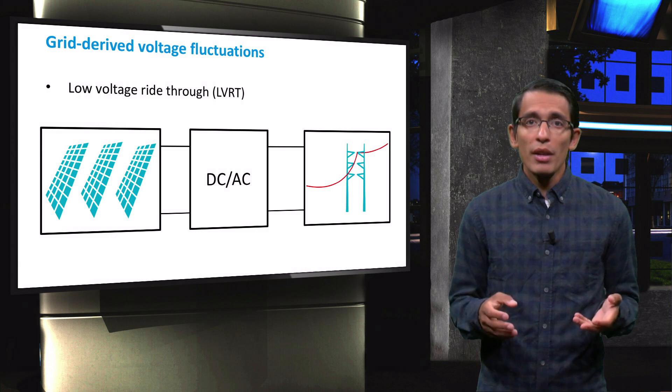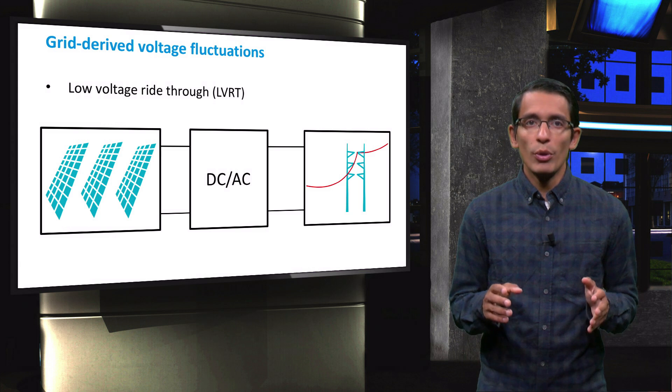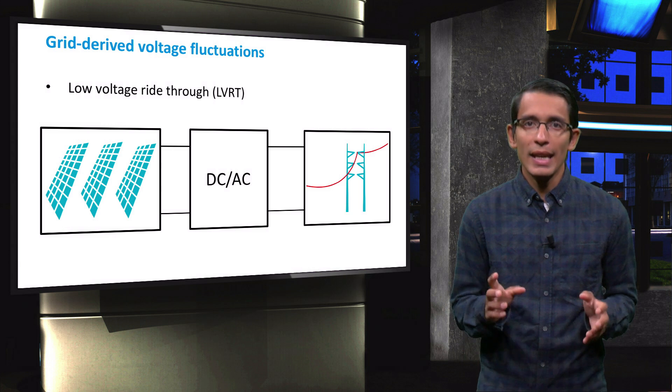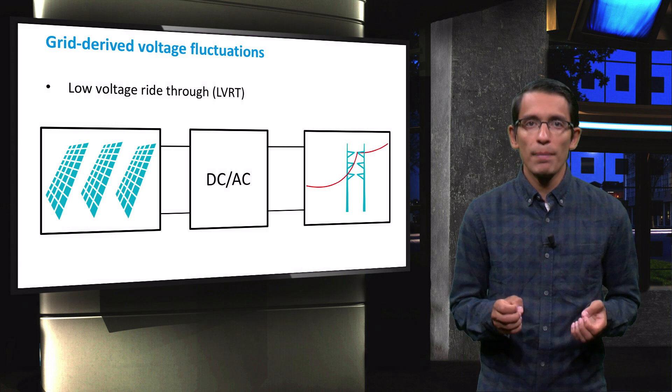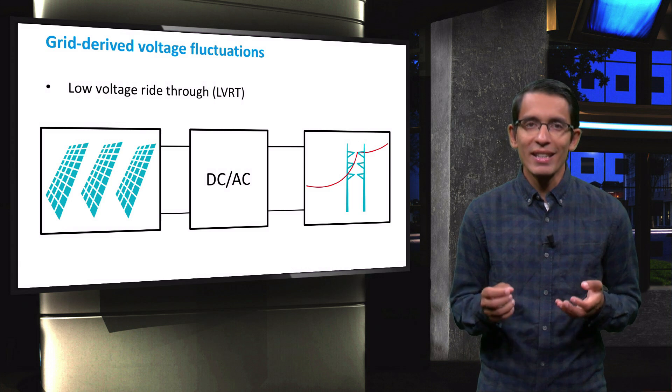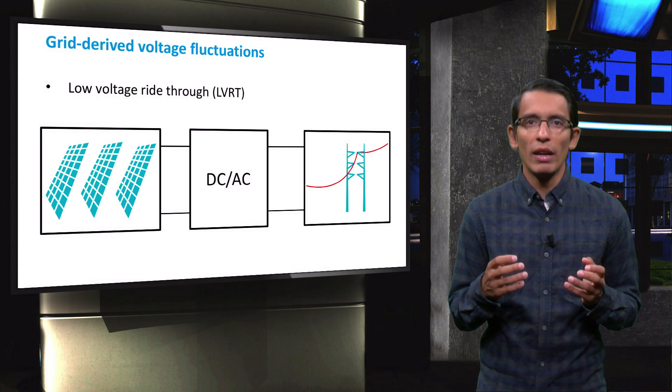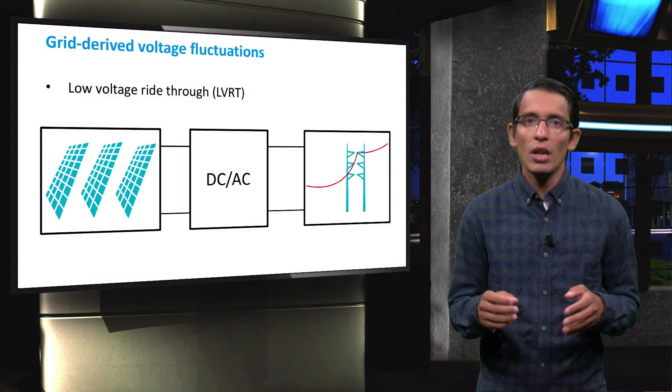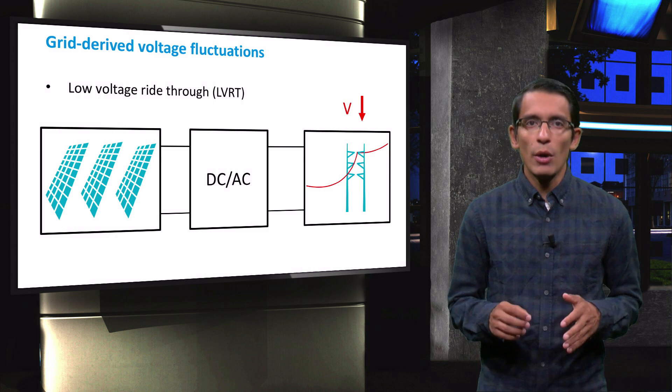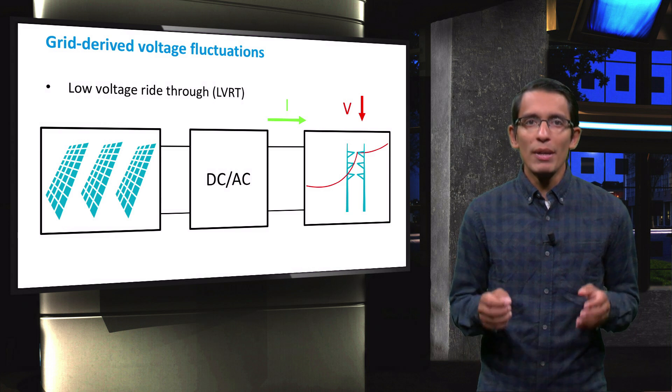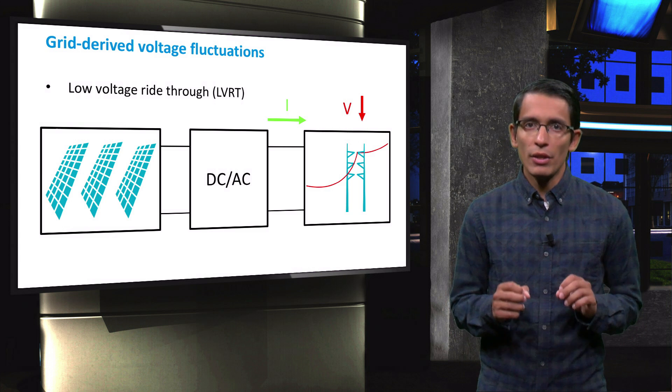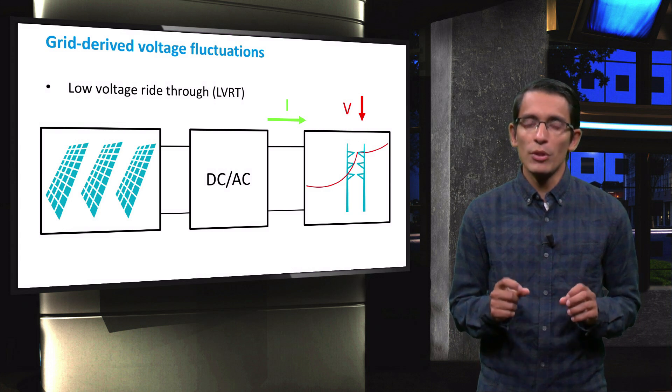One way to broaden voltage dip tolerances is to incorporate low voltage ride-through techniques into the inverter design. This term refers to the capability of electric generators to stay connected in short periods of lower electric network voltage or voltage dip. When the voltage of the distribution system goes down, the inverter is programmed to keep injecting current into the system. This way, the PV is able to remain connected to the grid for short period voltage dips or brownouts.